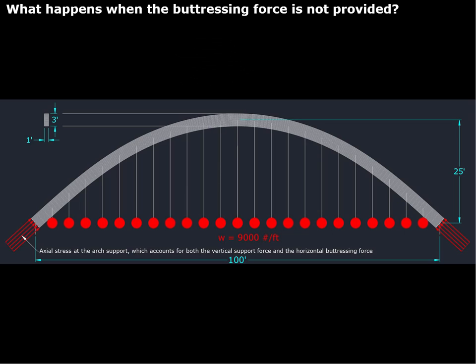An interesting question is what happens when the buttressing force is not provided. Here we see a glulam arch spanning 100 feet, with a load of 9,000 pounds per foot. The cross section of this arch is 1 foot by 3 feet. These are not exactly common dimensions, but this is a hypothetical problem we would like to analyze to see what are going to be the issues internal to this arch.